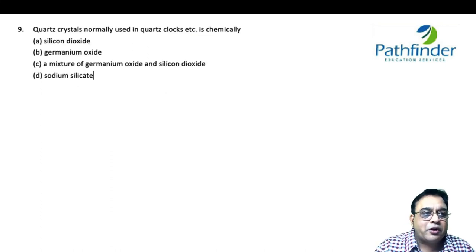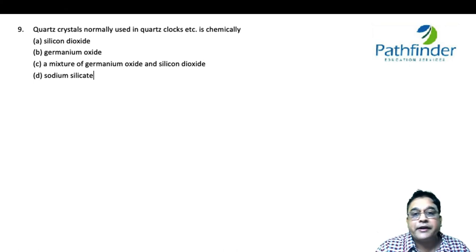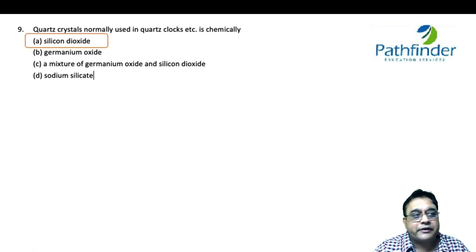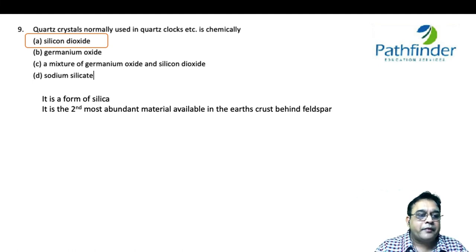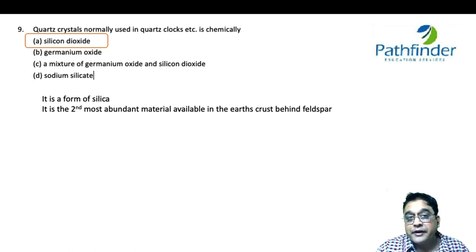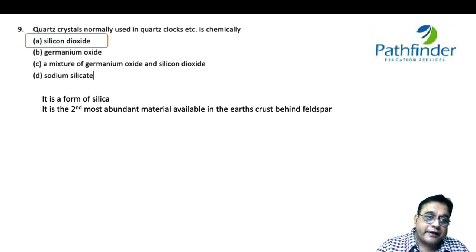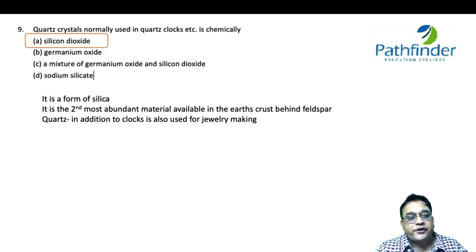Quartz crystals, normally used in quartz clocks, are chemically silicon dioxide — the second most abundant material found in the Earth's crust, behind feldspar. It is a form of silica. Quartz, in addition to clocks, is also used for jewelry making.